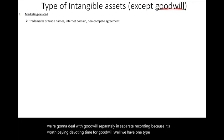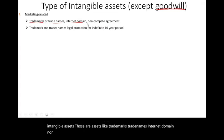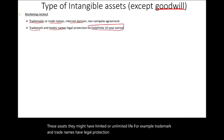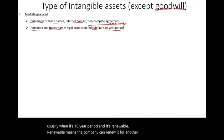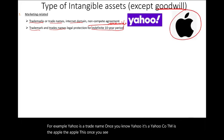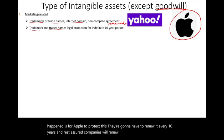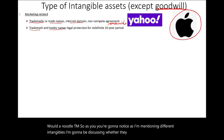We have one type called marketing-related intangible assets. Those are assets like trademarks, trade names, internet domains, and non-compete agreements. These assets may have limited or unlimited life. For example, trademarks and trade names have legal protection for an indefinite 10-year renewable period — the company can renew it forever. Yahoo is a trade name; the Apple logo is a trademark. Companies will renew their trademarks every 10 years, so they tend to have an indefinite life.